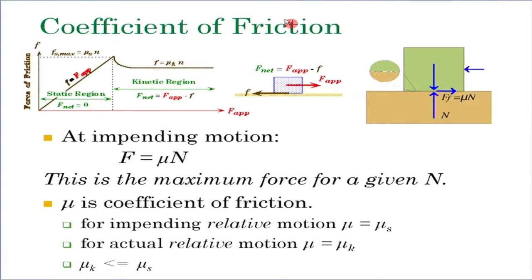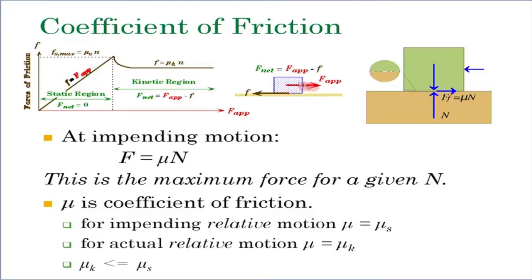Let us get back to the coefficient of friction. The friction we are going to discuss is called Coulombic friction or dry friction. If we have a block placed on a surface, when the applied force is zero, there is no resisting force of friction. If you start increasing the applied force, the resisting force matches exactly with the applied force to maintain equilibrium. But the contacting surface does not have infinite capacity to exert a resisting force. Coulomb's law, from empirical experiments, works very well for a lot of engineering problems.